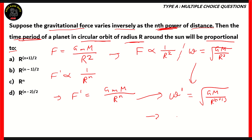So as you can see, omega dash is proportional to r raised to n plus 1 over 2. This is how omega is proportional to radius in the case where f is inversely proportional to 1 over r raised to n.